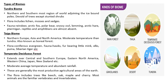Next comes the taiga biome, found in northern Europe, Asia, and North America, with moderate temperature compared to tundra. It is also known as the boreal forest. Flora includes coniferous evergreen trees. Fauna includes hogs, fur-bearing animals, mink, elk, puma, Siberian tiger, etc.